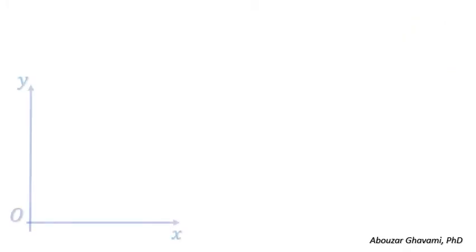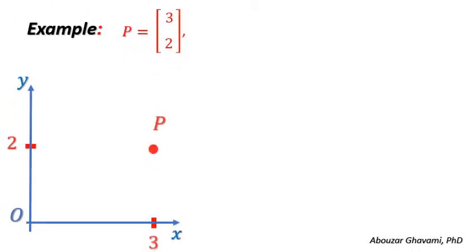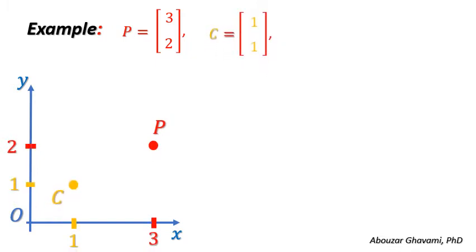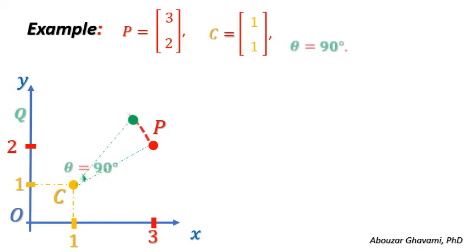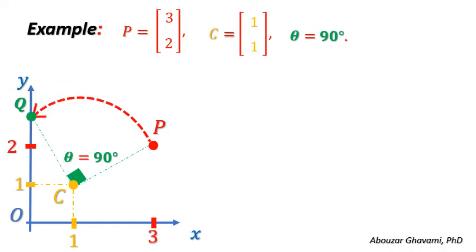As an example, let us consider point P with coordinates 3 and 2, and center point C with coordinates 1 and 1. We rotate point P around center point C counterclockwise with angle theta equal to 90 degrees.